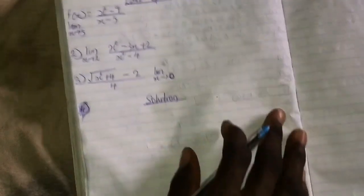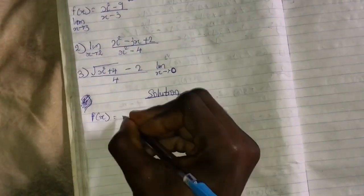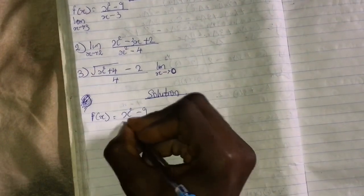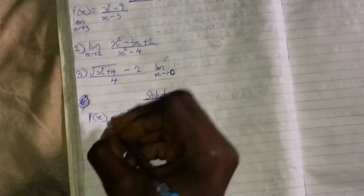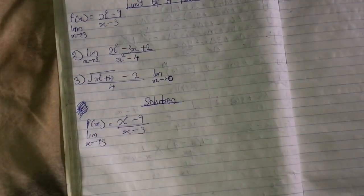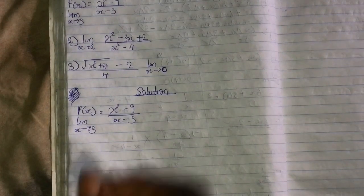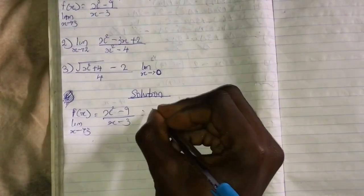Let's start from number one which is f(x) = (x^2 - 9)/(x - 3) and we are told to limit x towards 3. So I know that the first thing that you are going to do is... let me make this mistake so that you guys can understand.